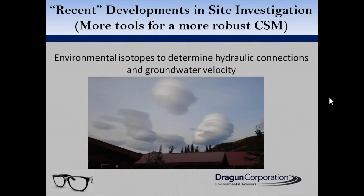I'm going to move for a few minutes to environmental isotopes. Environmental isotopes are naturally occurring isotopes — varieties of an atom — that occur in the hydrologic cycle. I'm going to talk about parts of the water molecule. These techniques have been around since the 1960s, mostly starting in Europe, but not many people use them. I'll talk about hydrogen isotopes, specifically tritium — a type of hydrogen that is radiogenic with a half-life of 12.3 years — and then oxygen isotopes.